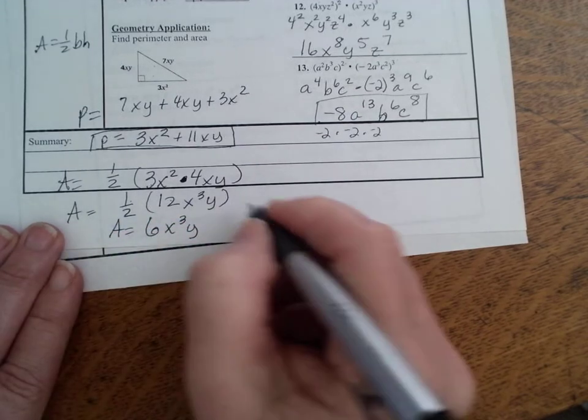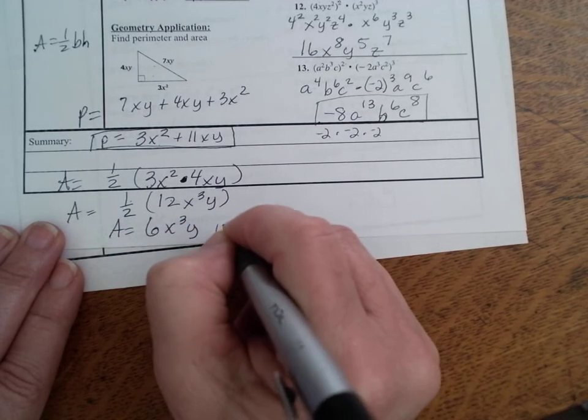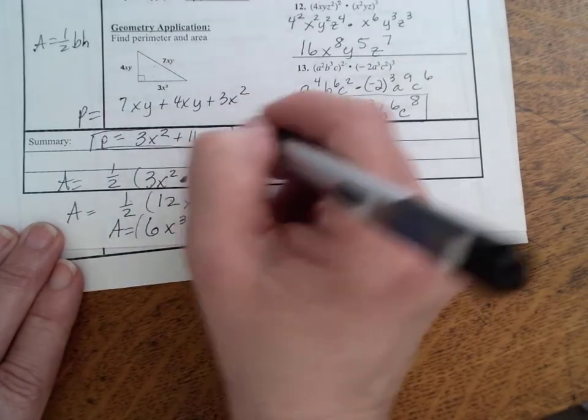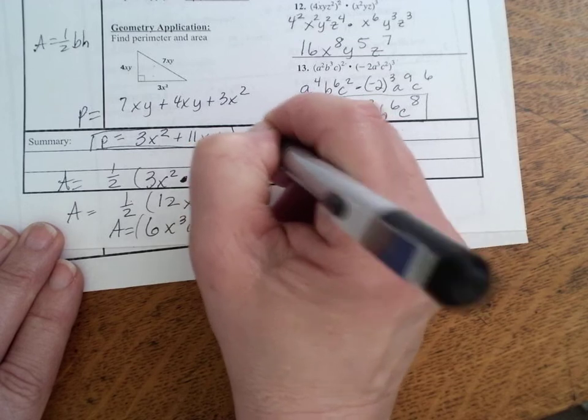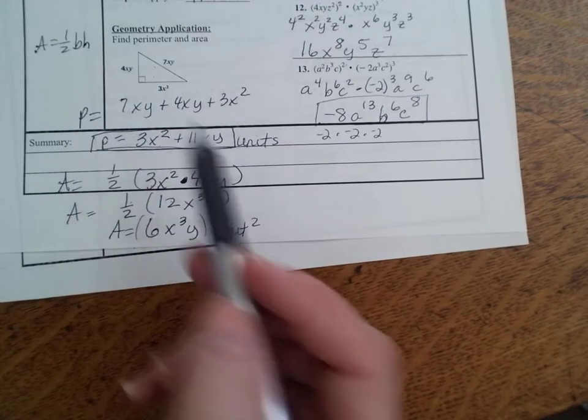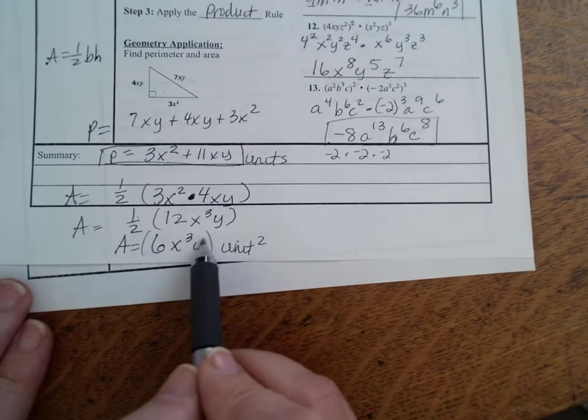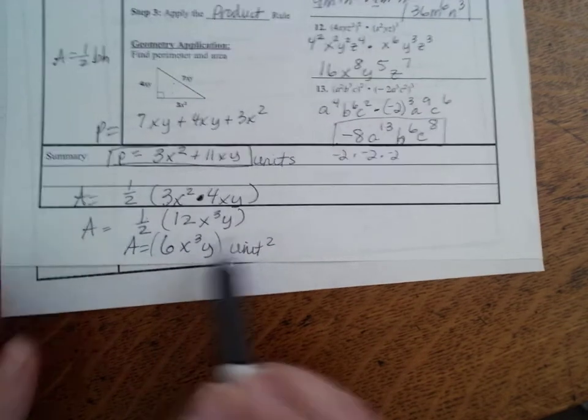So half of 12 is 6x cubed y. So that is your area, and that's going to be like unit squared, whatever that's going to be. You really should have parentheses around that if you do that. And then this should be units, too. I should have said that. Because we don't know if it's feet, inches, whatever. But that's your final expression for the area. So, 6x cubed y.